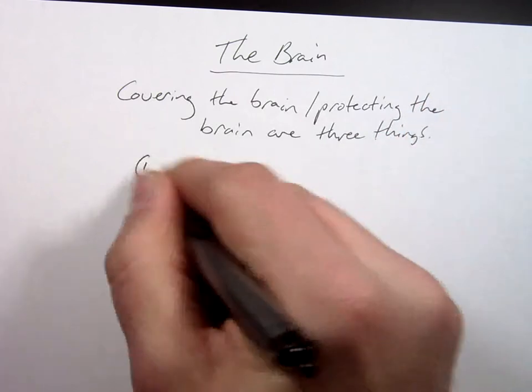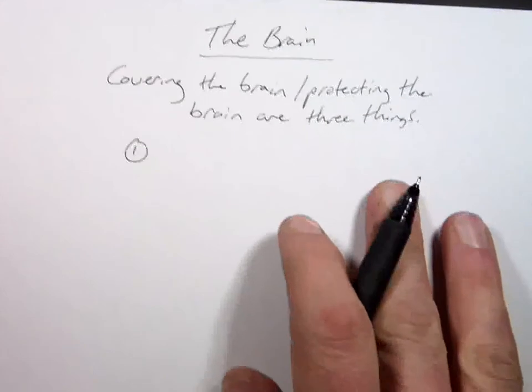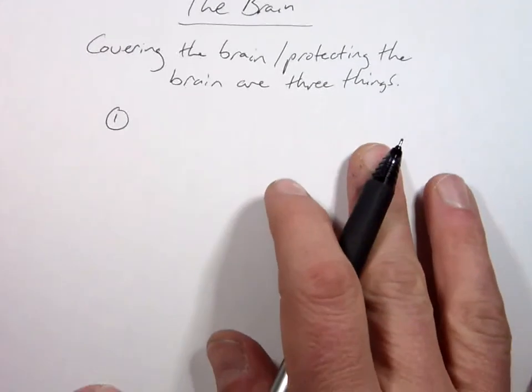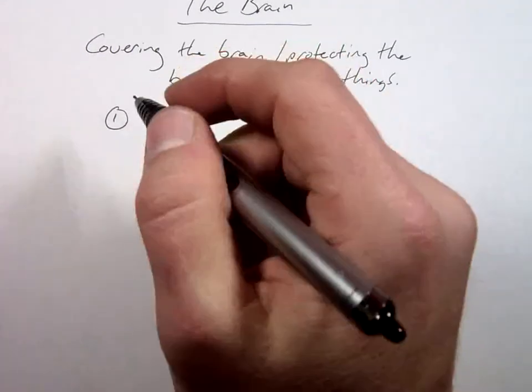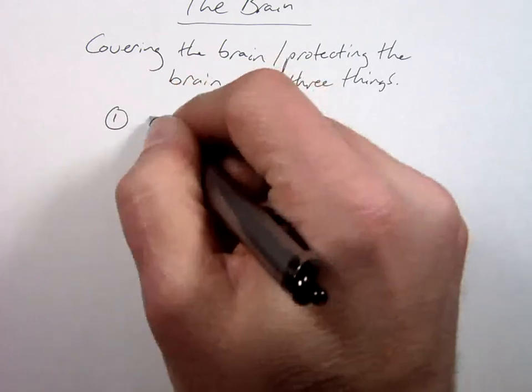First one's sort of obvious, it's your thick candy shell surrounding the brain. What would that be? Skull. More specifically, I'm going to use that word, cranium.